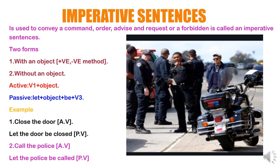Imperative sentences are a very easy topic compared to other topics in active and passive voice. There are two forms: with an object, and without an object. In an imperative sentence, there is no subject, so always start with the verb. In active voice: V1 plus object. In passive voice: start with 'let', then object plus 'be' plus V3, where V3 is the past participle.